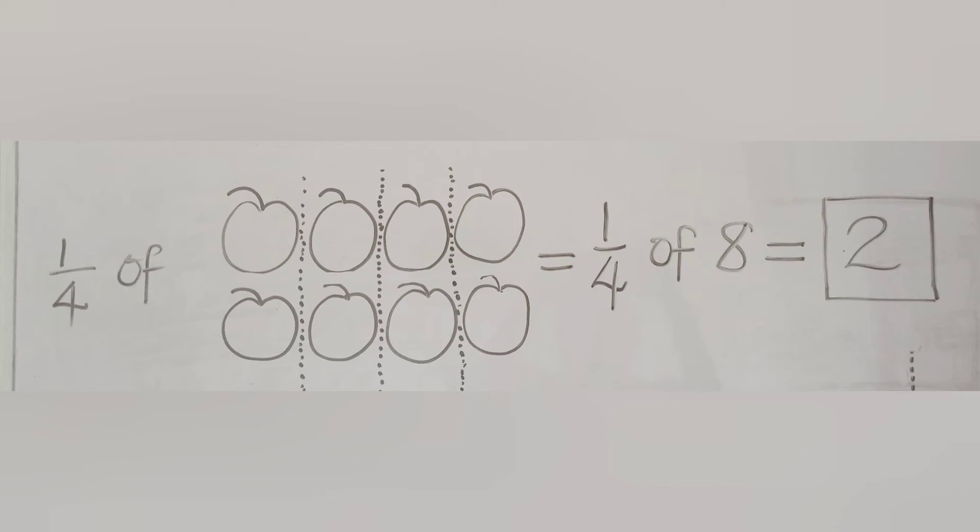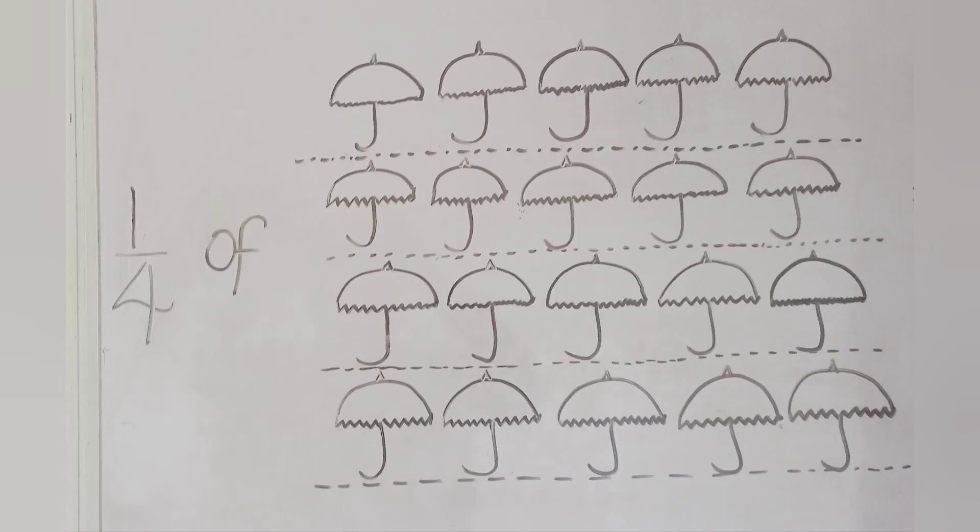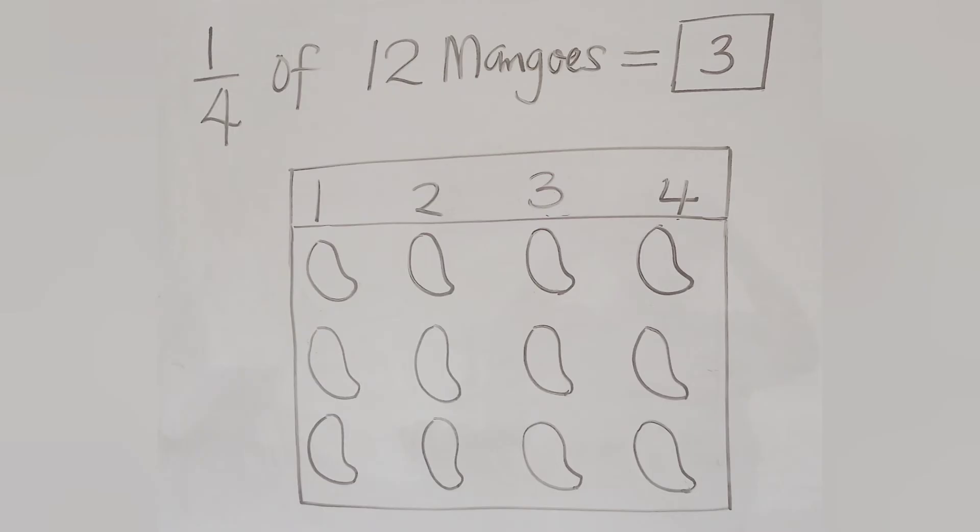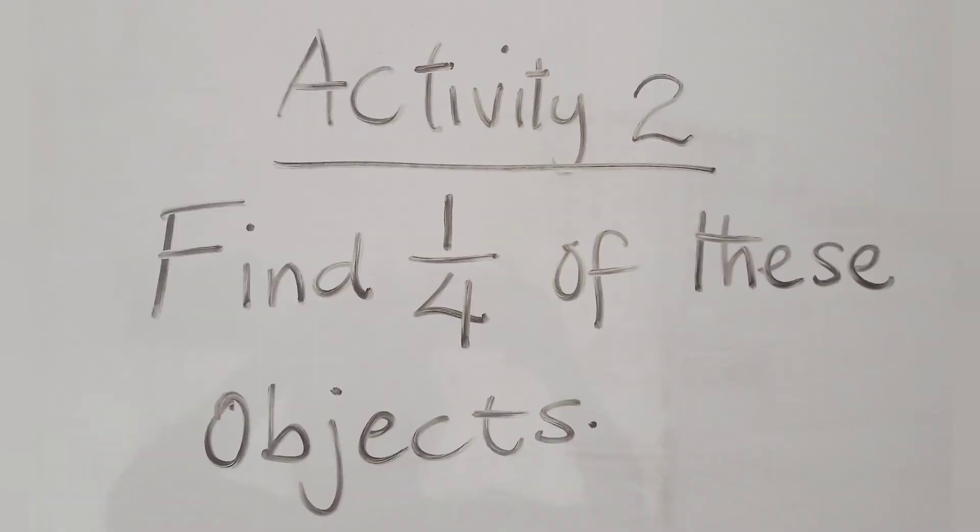So, that means one quarter of 8 is 2. One quarter of 20 umbrellas is 5 umbrellas. One quarter of 12 mangoes is 3 mangoes.